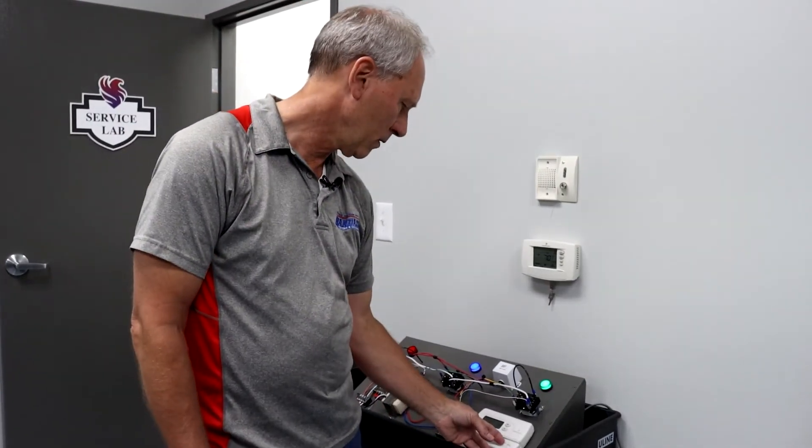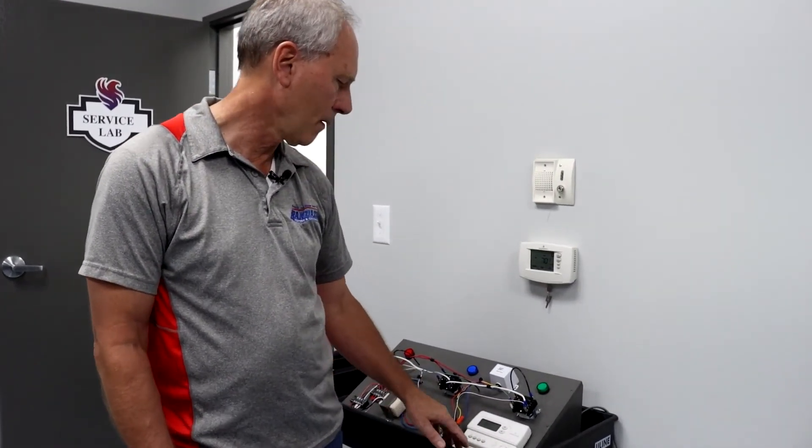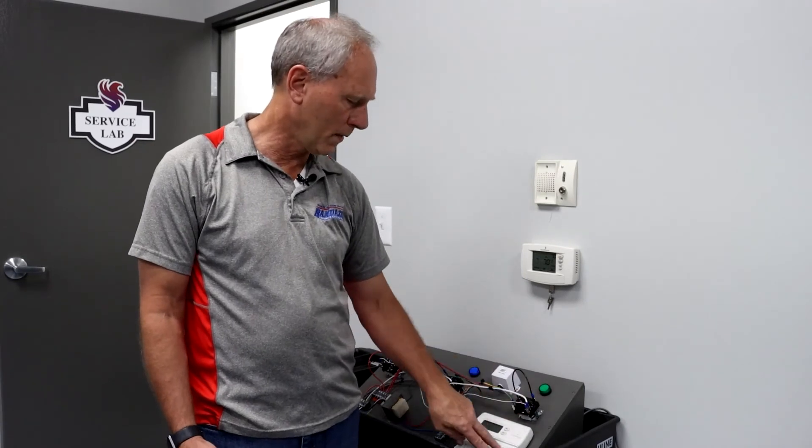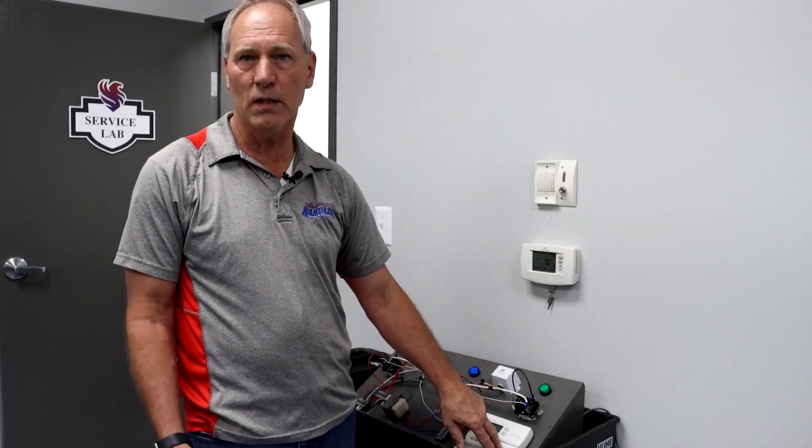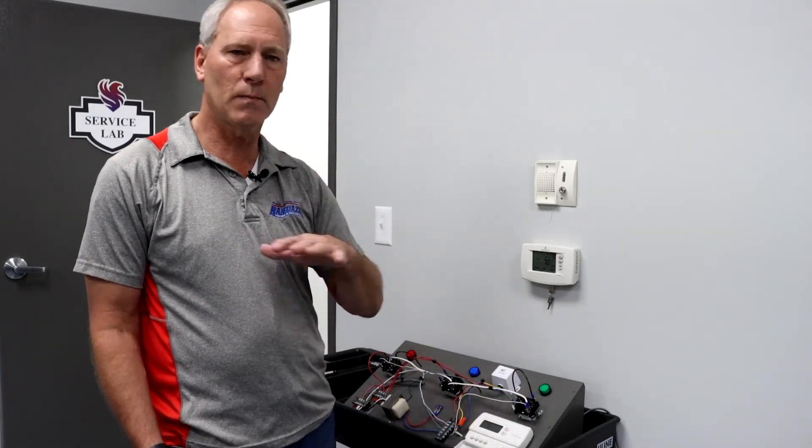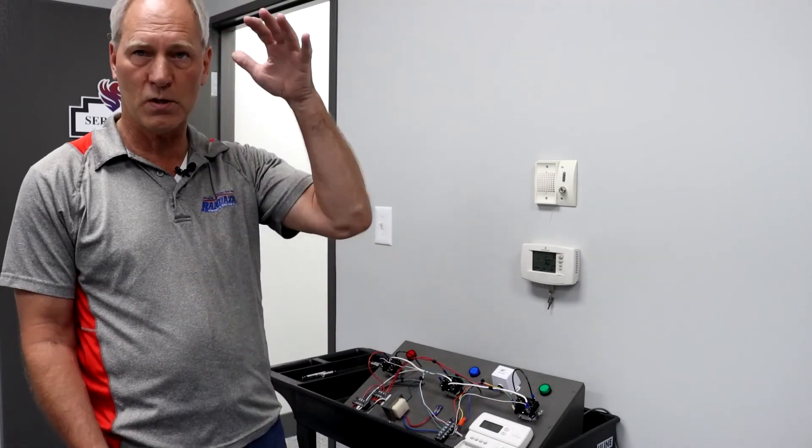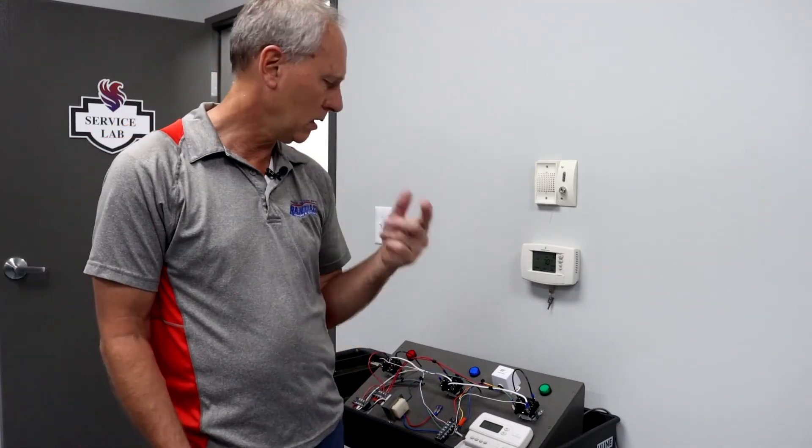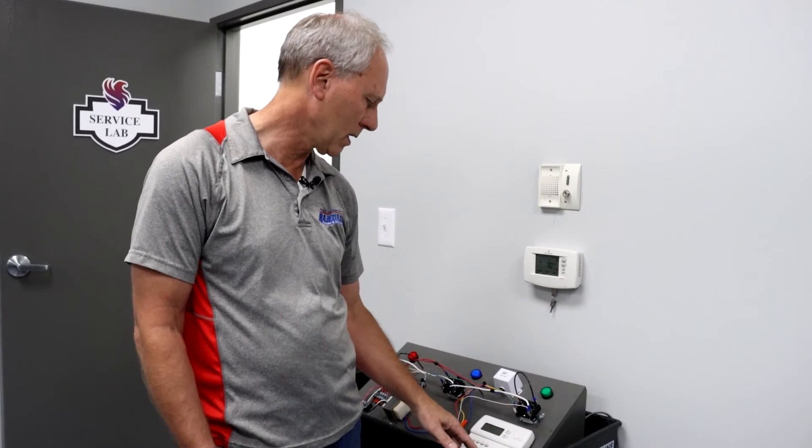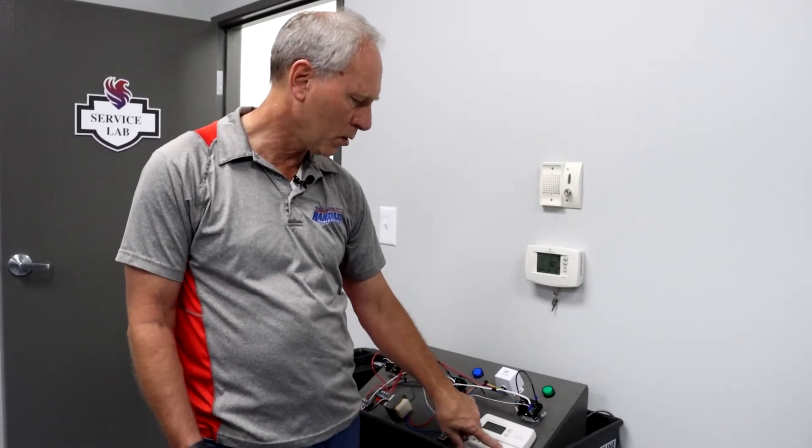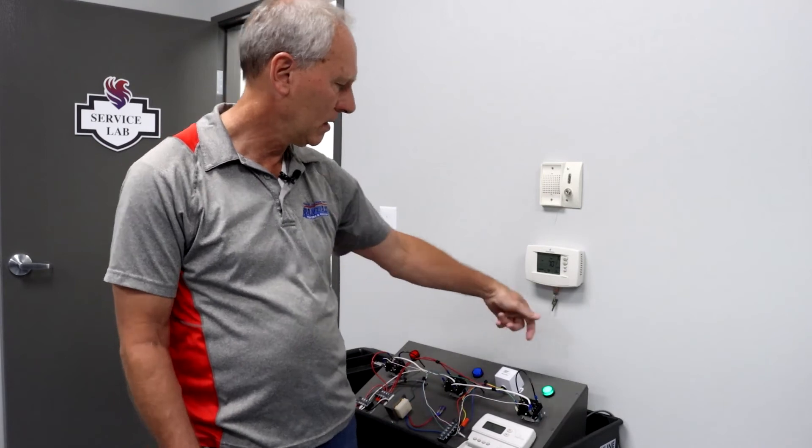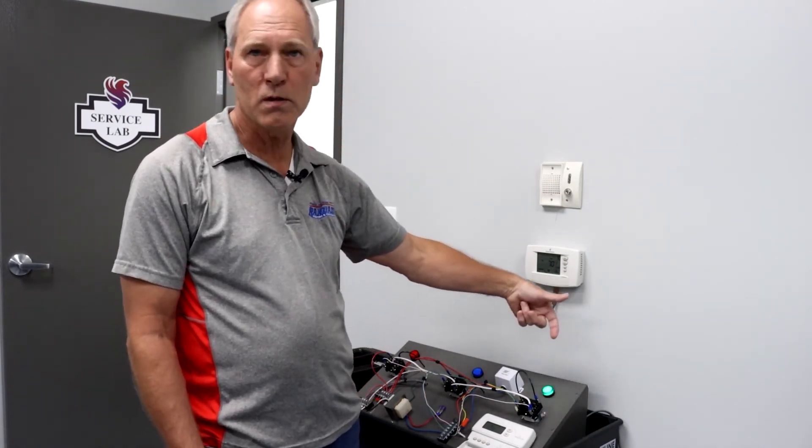Then we shut it off. If the homeowner just wants to run the blower by itself to recirculate the air or to take some of the cool air from the basement and recirculate it upstairs to even that cooling or heating out, the fan switch you just switch it from auto to on and now the blower is running.